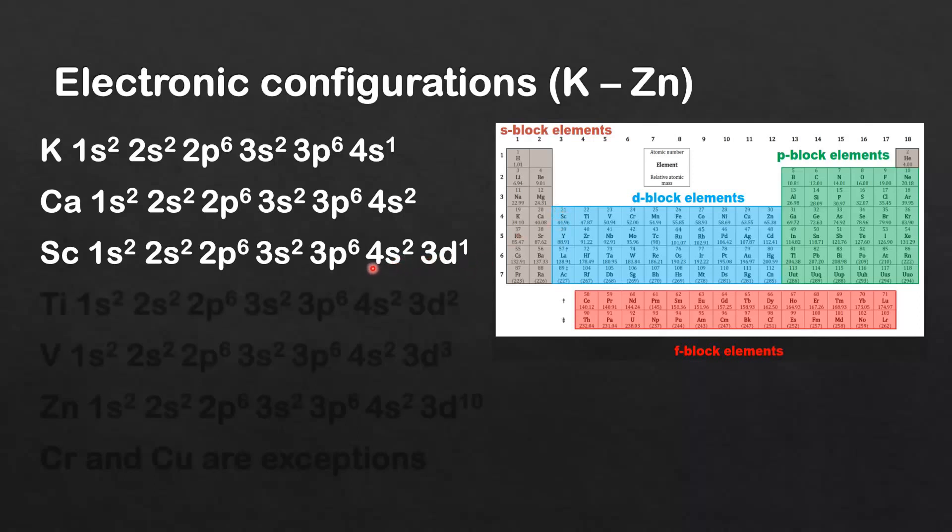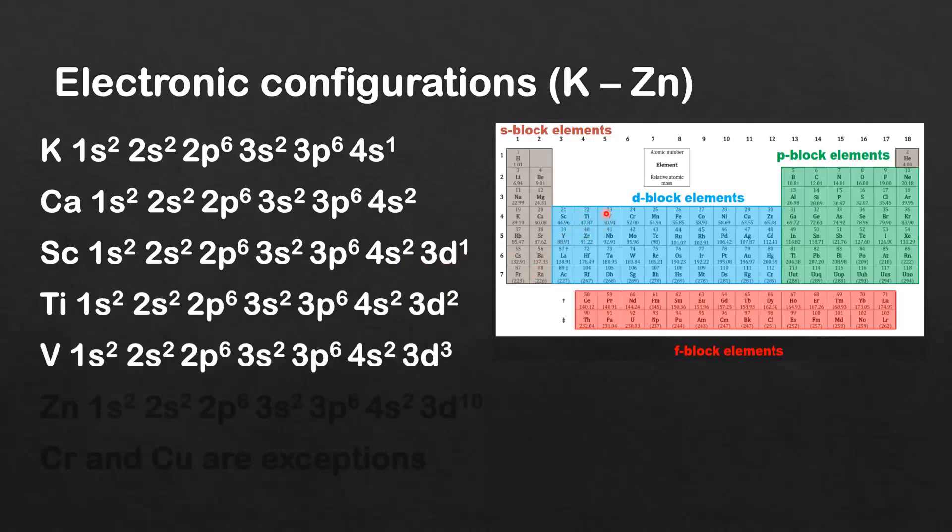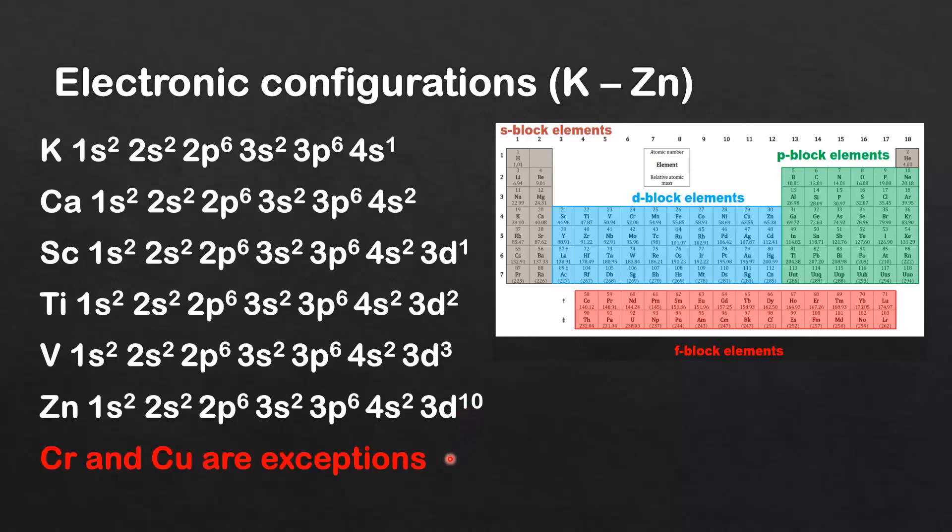As you can see, the 4s sublevel fills before the 3d sublevel. Moving on to titanium, then vanadium, and then I'm going to jump to zinc, which completes the 3d sublevel with 10 electrons. I'm going to talk about these two later, but chromium and copper are exceptions to the Aufbau principle, and I'll look at these in more detail later.